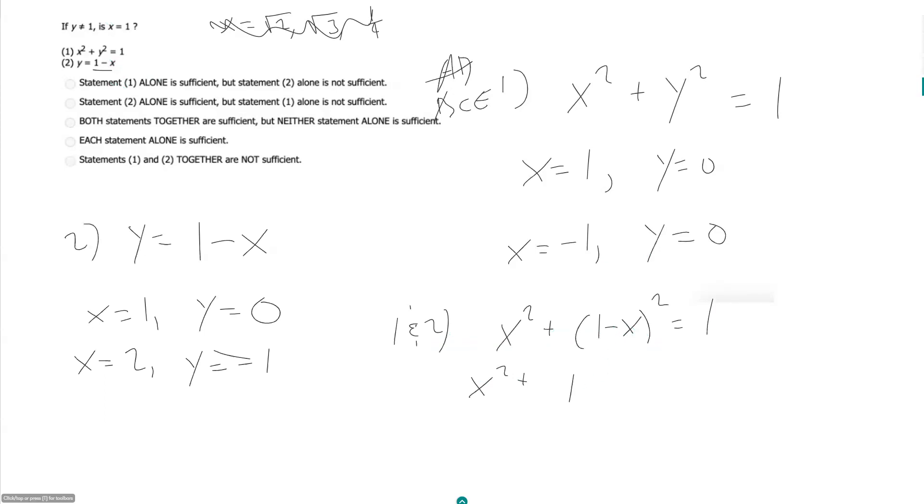Then it'll be minus 2x plus x squared is equal to 1. So now if I start combining things, x squared plus x squared is 2x squared. It looks like my ones cancel out.